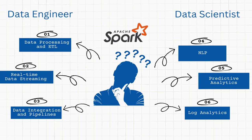A third example use case for data engineers is building data pipelines. Here you can integrate data from all sorts of sources like databases, APIs, and flat files, making sure that all data is consistent and correct. Plus, Spark supports a bunch of data formats and different storage systems.